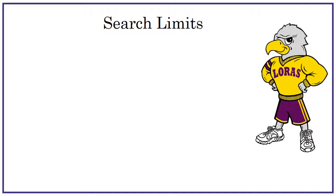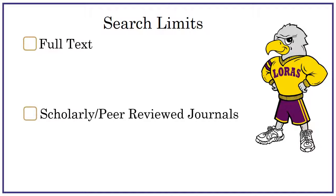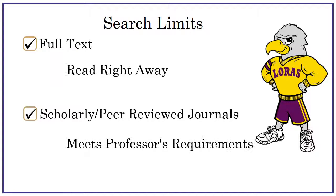Most of our databases also have other limits you can apply before and after your search. Important ones to look out for are full text and peer-reviewed or scholarly. Many of our databases don't include the entire text of every article due to restrictions from the publisher. Limiting your search to full text ensures that all the articles found are ones you can read right away. We will talk about the difference between scholarly and popular articles in a future lesson, but for now we recommend using this limit as it ensures that the articles meet the requirements of most assignments.